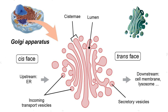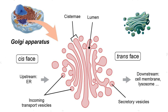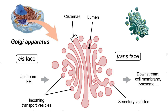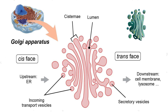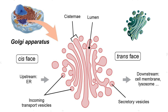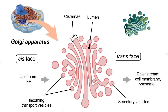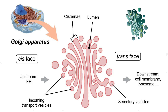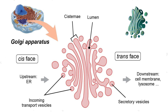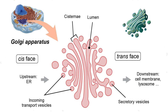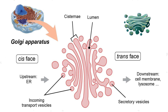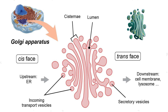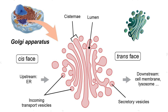The Golgi lumen, the space within these cisternae, hosts enzymatic processes crucial for molecular modifications. The cis face is the entry point, receiving molecules from the endoplasmic reticulum, while the trans face serves as the exit point, sorting and directing these modified molecules to specific destinations in the cell. Understanding this structural complexity is vital for comprehending the Golgi apparatus's function in cellular protein and lipid processing.